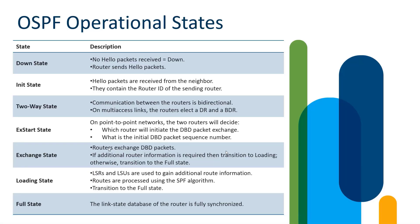We're here to discuss OSPF operational states, focusing on the progression OSPF takes from being activated on an interface to having multiple OSPF routers reach convergence. To complete this convergence, we have seven states to go through: OSPF will transition from down to init, init to two-way, two-way to xstart, xstart to exchange, exchange to loading, and finally loading to full. Let's get started.